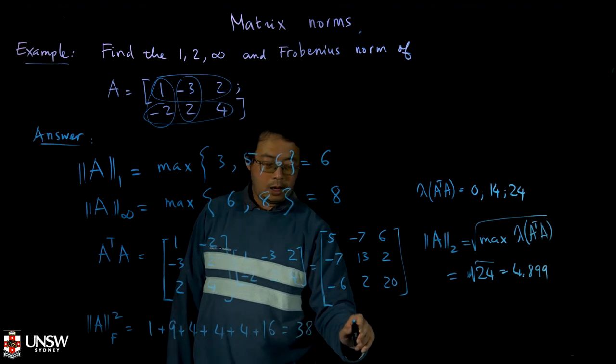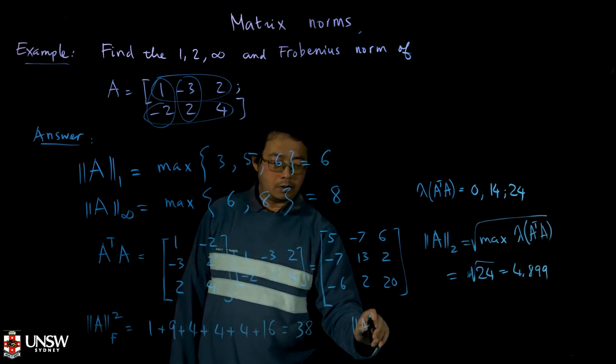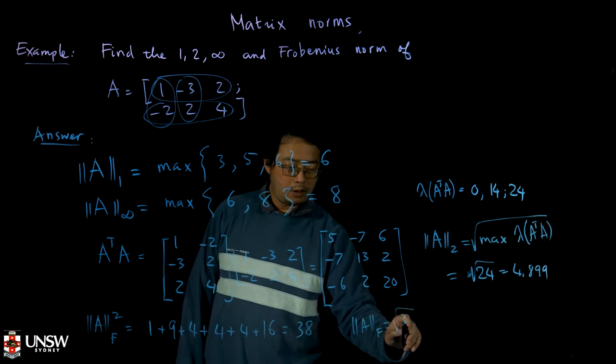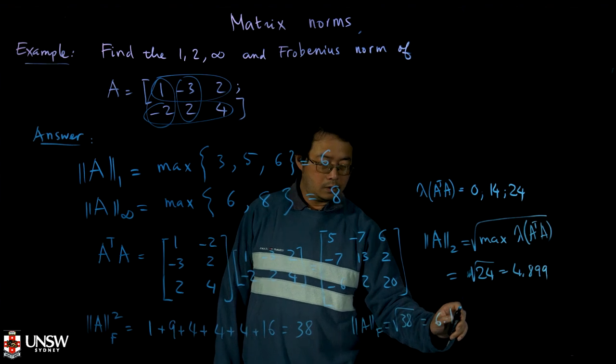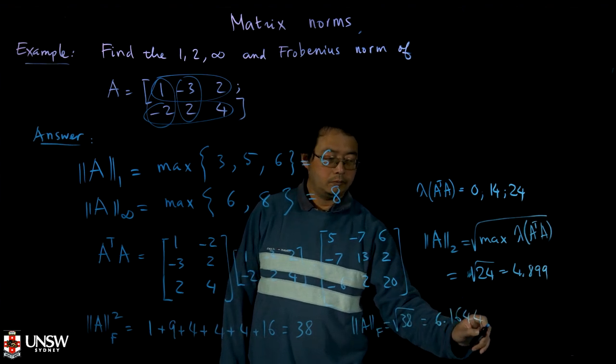And so hence the Frobenius norm of the matrix A is just square root of 38, and it will equal 6.1644. That's it.